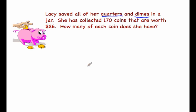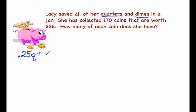Let's think logically about this. She's only got two types of coins. She's got quarters which are worth 25 cents. We don't know how many quarters she has, so we're going to multiply that by q quarters. Then we're going to add to that all of our dimes. Dimes are 10 cents each, so we're going to multiply 10 cents times the number of dimes that we have.